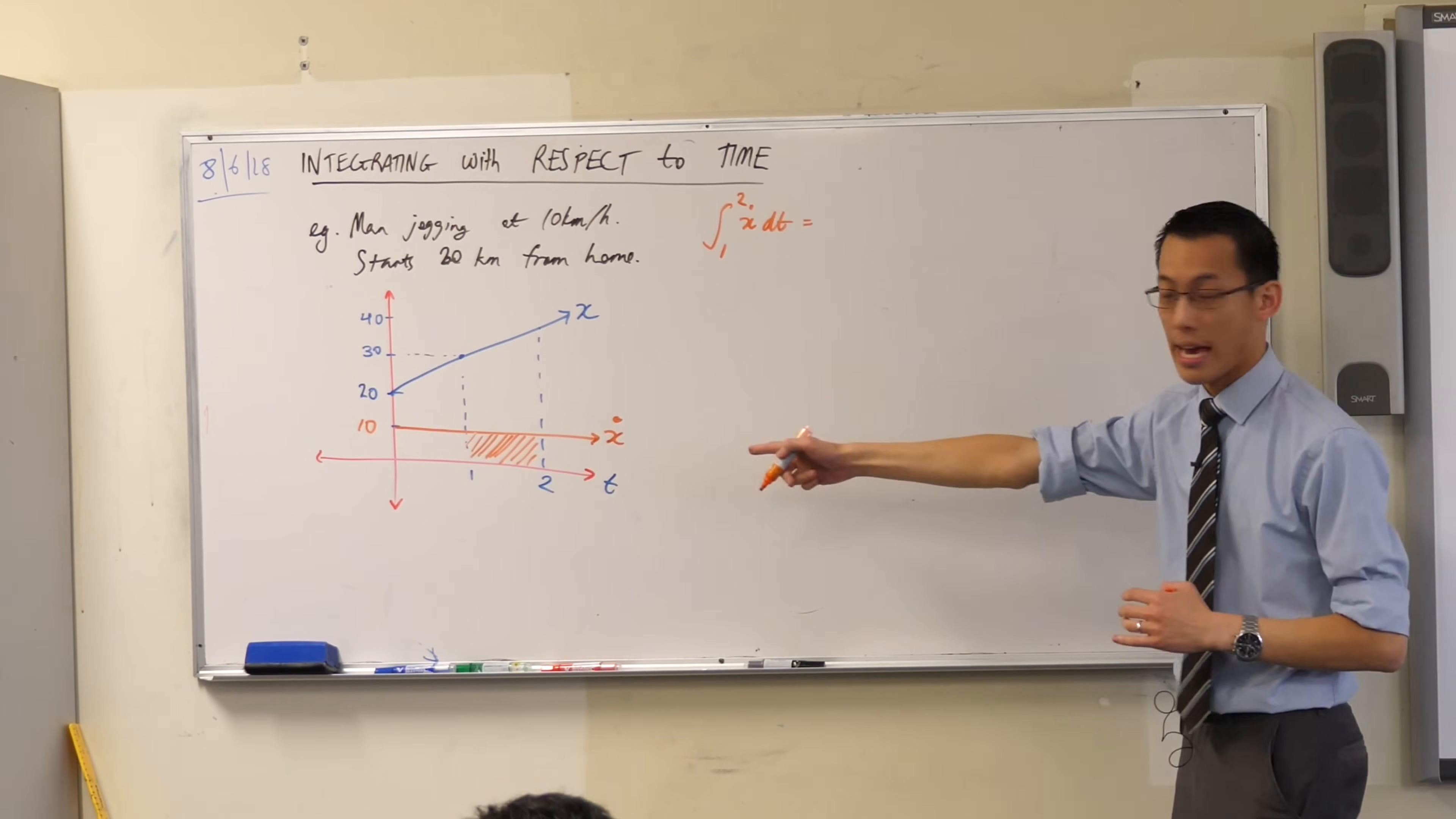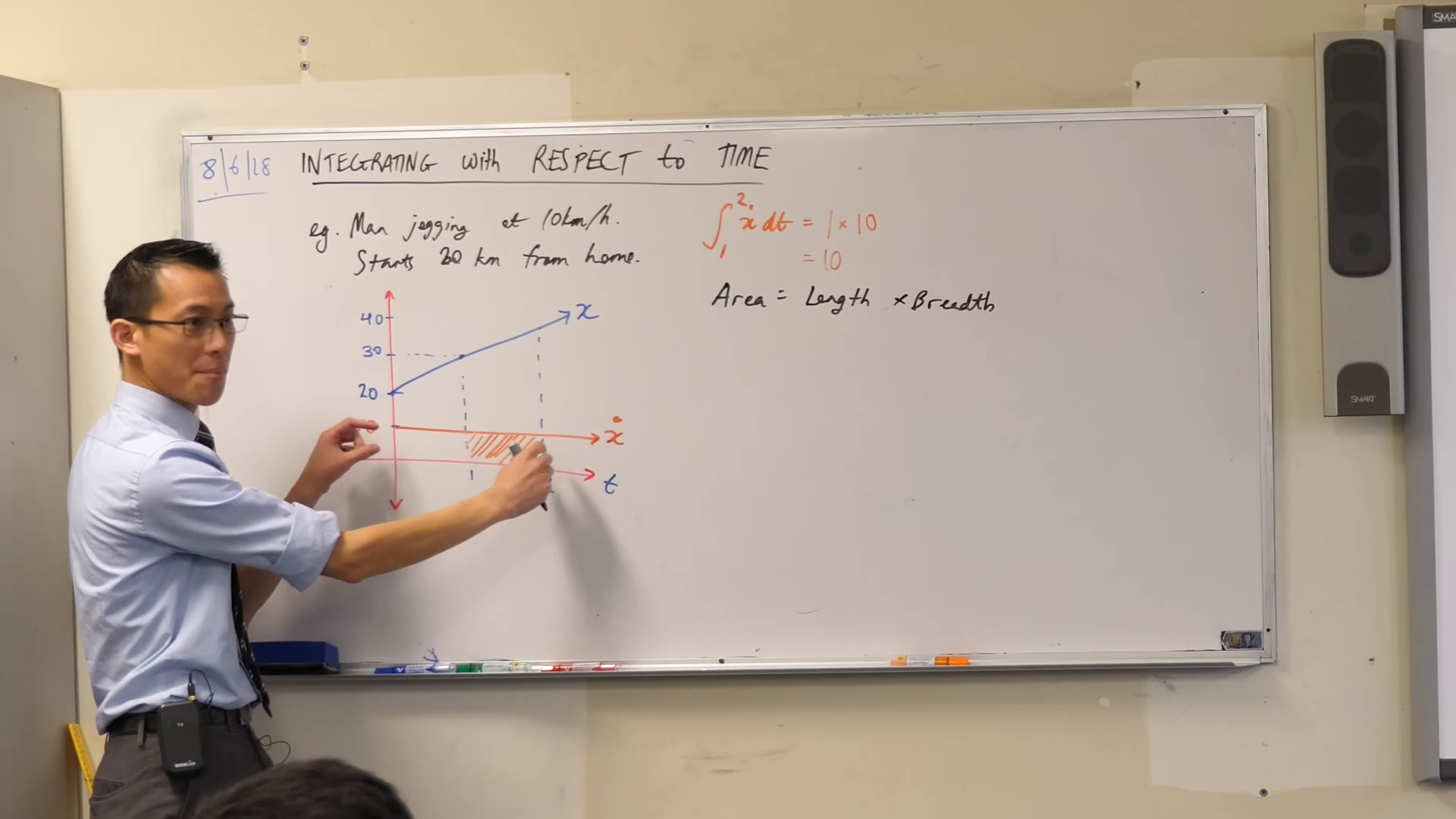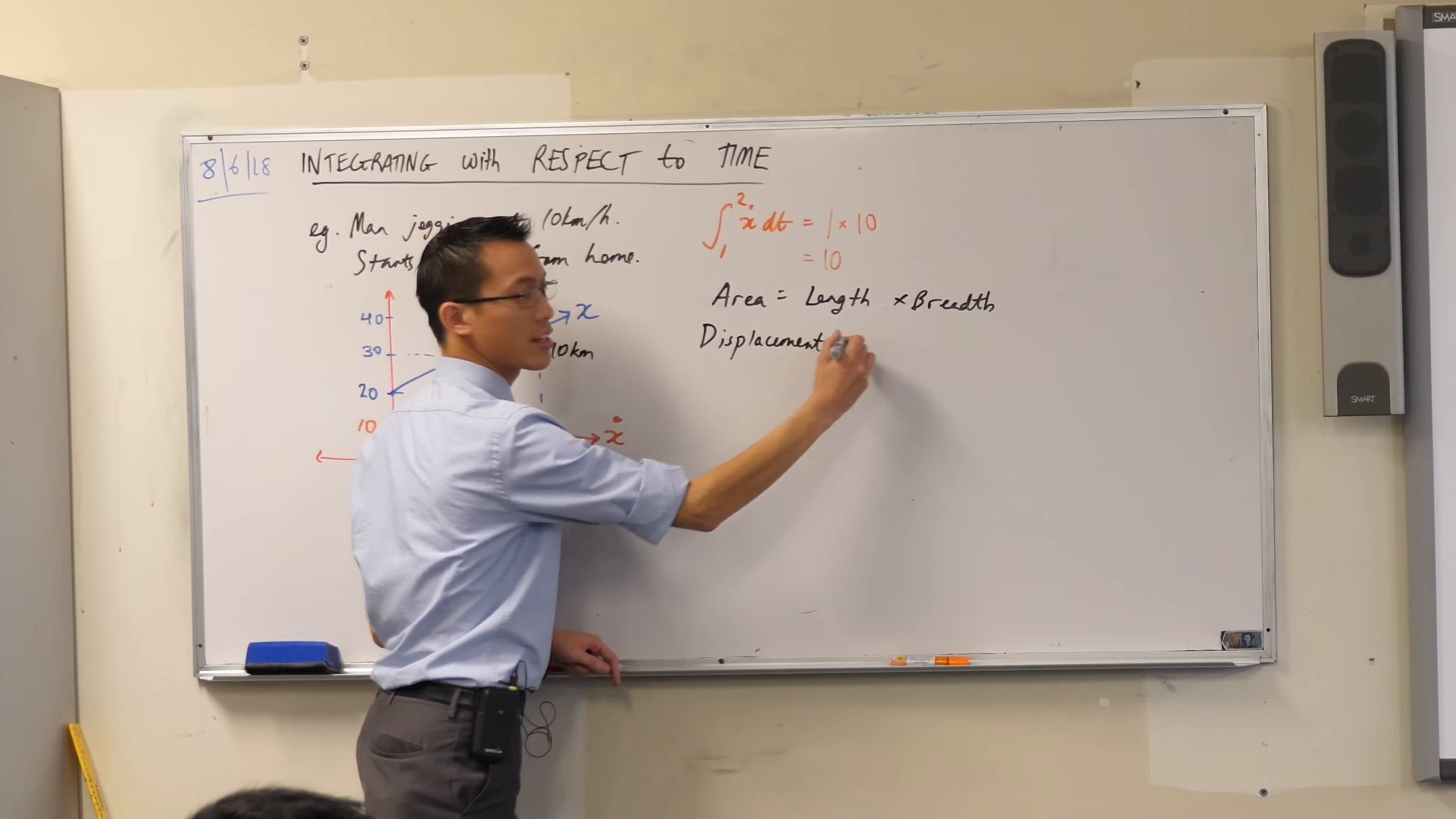It's length times breadth, which in this case will be 1 times 10, because that's how tall it is. So that of course is 10. Now, get this with me. Write this underneath because this is so important. You just told me that area equals length times breadth. But what you've just worked out is not just an area, but that area represents what? Because I've integrated the velocity graph, it's given me a change in displacement. Look, here I am at time one and I go up to time two, a distance of 10 kilometers. So instead of saying just area, I can say that's displacement.